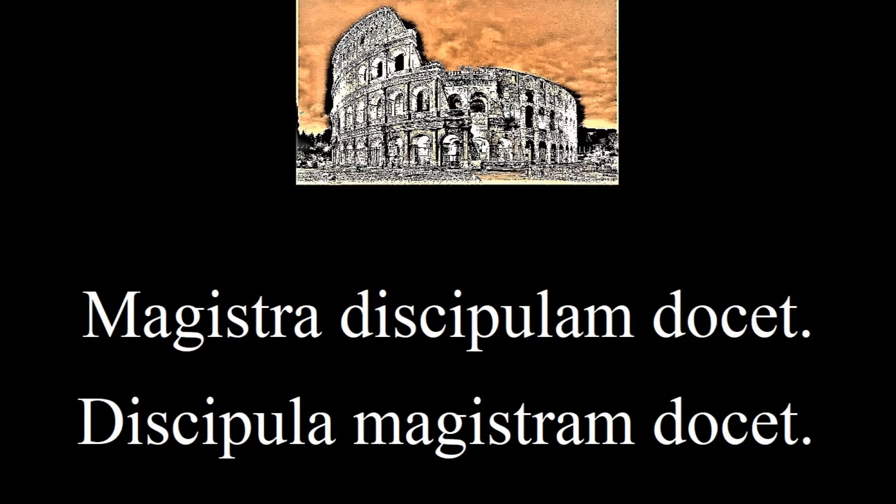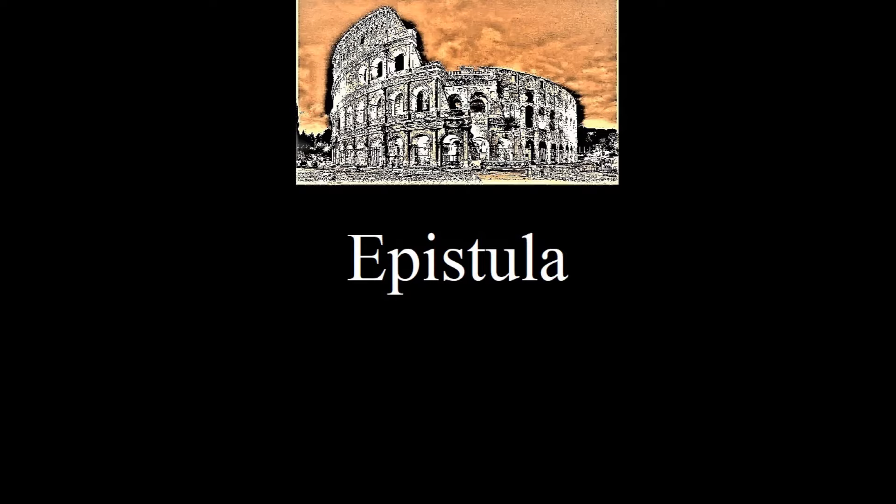The key to remember is that the first and last positions of the sentence are the most important, so this is where the verb usually goes. Can you guess what an epistola is? If you know what an epistle is, it should be pretty easy. Following the last example, try to say 'the poet writes a letter.'